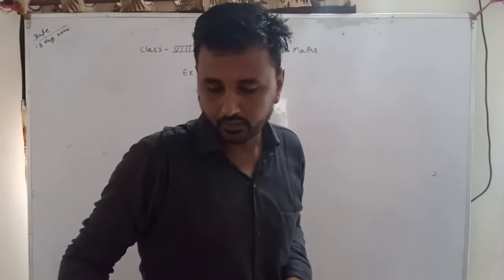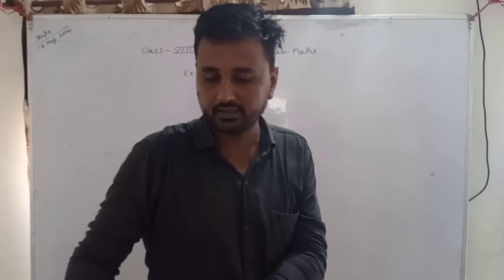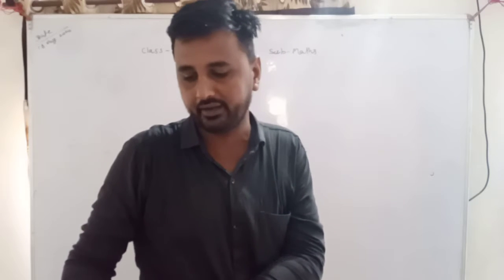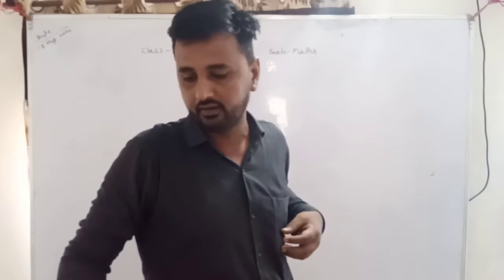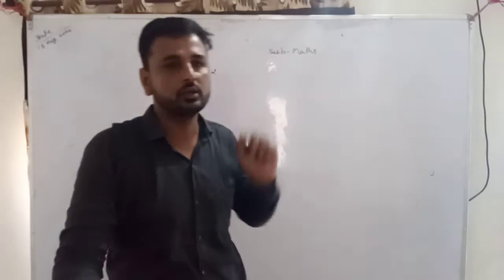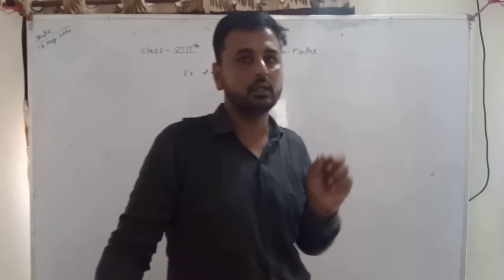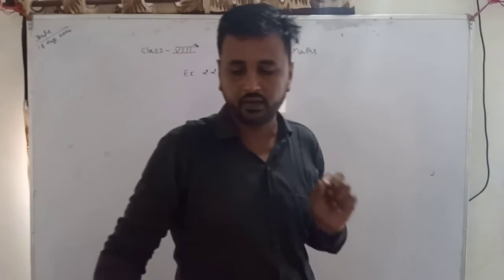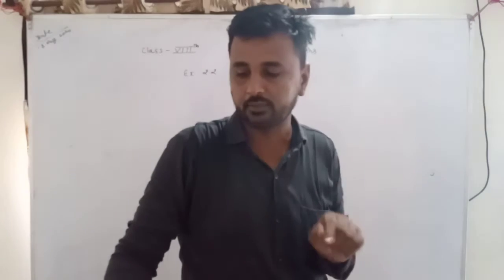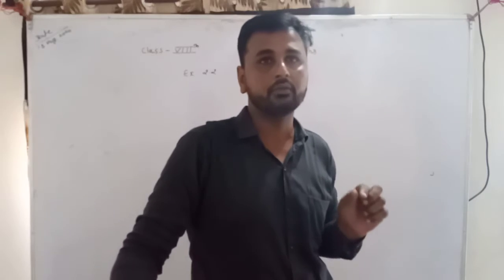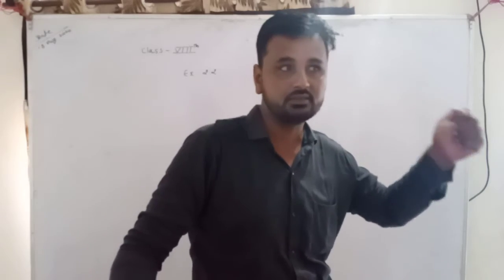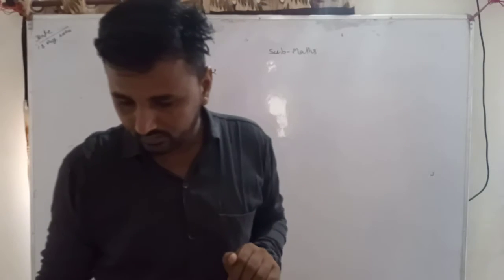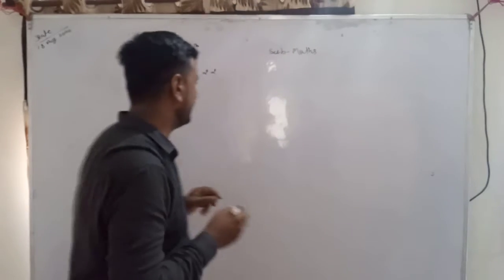Question number 4: Sum of 2 numbers is 95. If one number exceeds the other by 15, find the numbers. यानि अपने दो number का जो sum है वो 95 है। एक number है वो second number से 15 ज्यादा है। अपने को दोनों number find करने हैं।